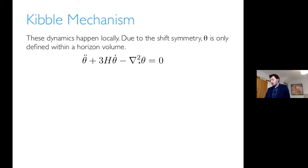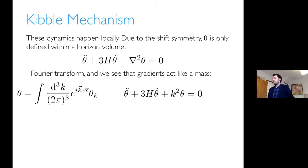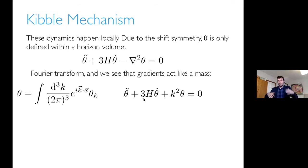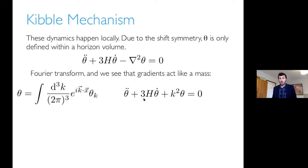Looking at the equation of motion for theta — theta-double-dot plus 3H theta-dot minus nabla-squared theta — going to Fourier space: theta-double-dot plus 3H theta-dot plus k-squared theta equals zero. The gradients act like a mass term. Anything with a wave vector larger than the Hubble scale will start to oscillate and decay, meaning short wavelength modes are smoothed out. Any mode that goes inside the horizon is smoothed out, but fluctuations larger than the horizon still persist. This leads to a smooth distribution within horizon volumes, but large variations between horizon volumes.